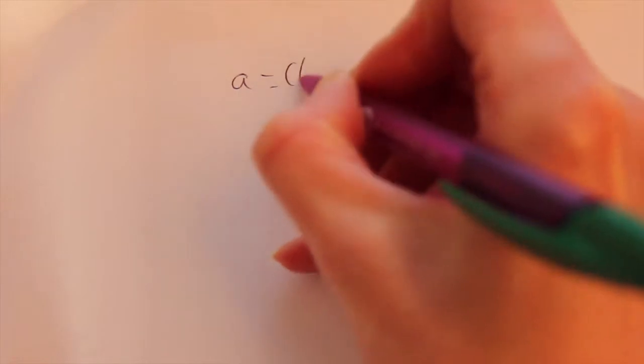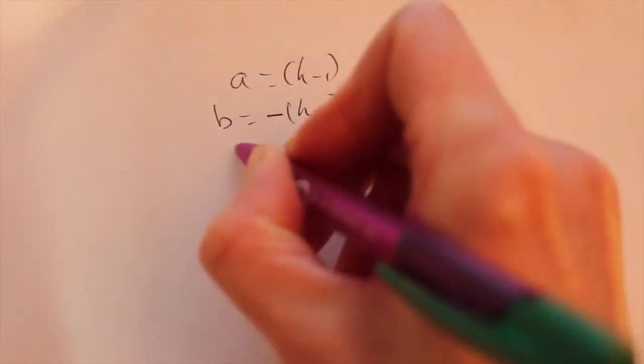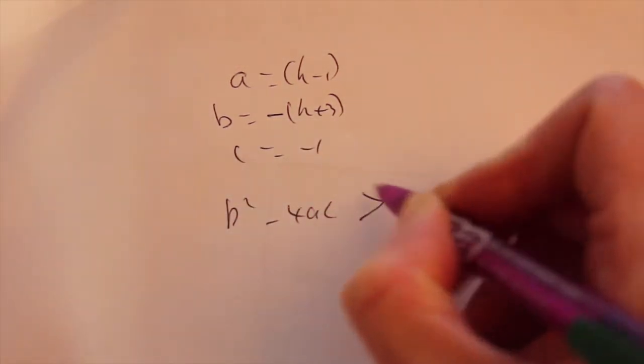So just pick out your a, your b and your c. So a is k minus 1, b is minus k plus 3 and c is minus 1. So b squared minus 4ac is greater than 0.